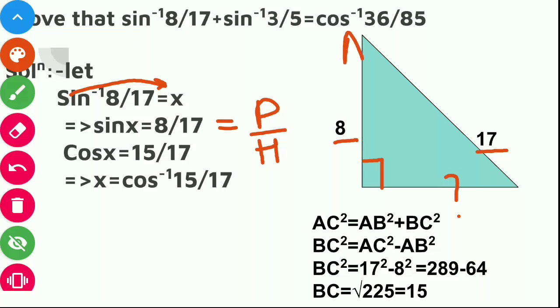So we will name this triangle as ABC and this angle as x. So AC square is equals to AB square plus BC square. BC square is equal to AC square minus AB square. Now putting the values of AB and AC, we get BC as 15.